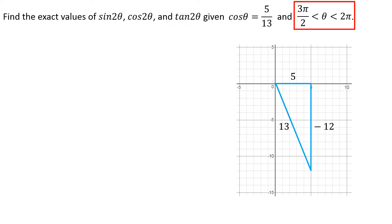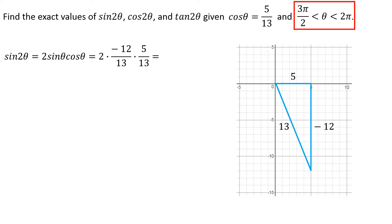Let's find exact values. Sine of 2θ equals 2 sine θ cosine θ. Sine of θ is −12/13 and cosine of θ is 5/13. So: 2 × (−12/13) × (5/13). Two times 12 is 24, times 5 is 120, and there's a negative, so the answer is −120/169.